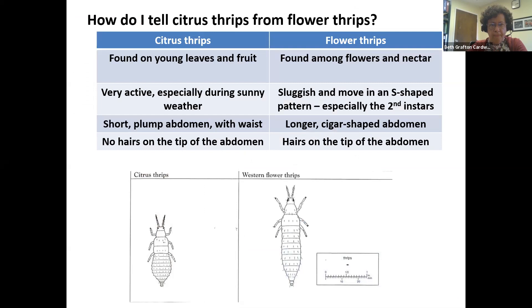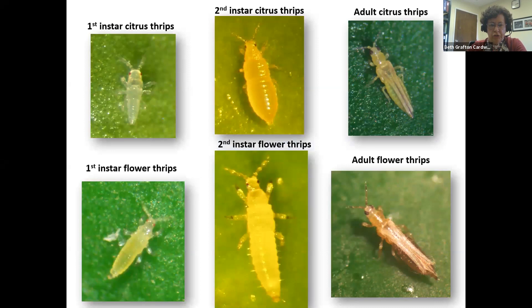One big question in early spring is: how do I tell citrus thrips from flower thrips? Once the flowers all fall off the tree the flower thrips go away — easy at that point. But the really difficult time is right at petal fall when there are still lots of petals and lots of thrips moving about. Basically it's a matter of size and body shape: citrus thrips are much shorter and plumper than western flower thrips. If you can see them, western flower thrips have hairs on the tip of the abdomen and move in a curved S-shape. We've developed charts and pictures downloadable from my website showing the different instars to help tune your eyes up at the beginning of the year.